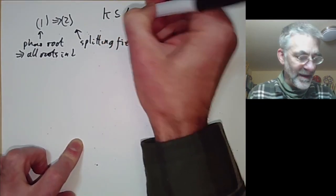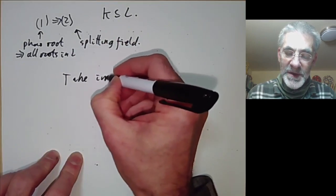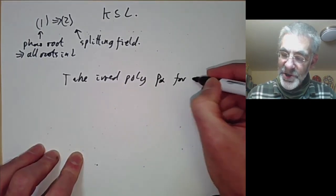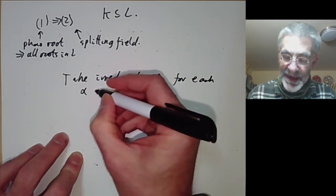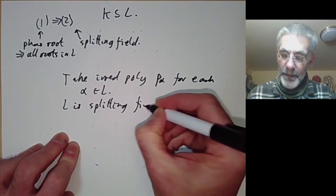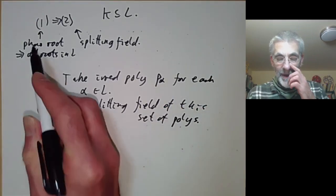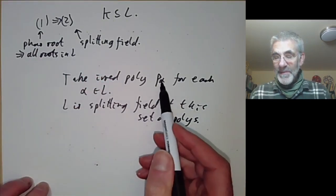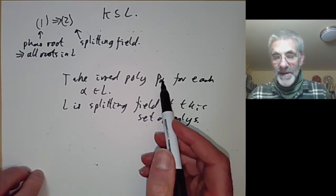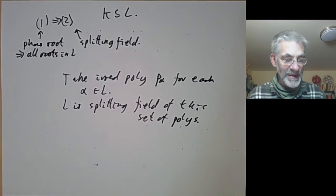Condition one implies two is easy: we take an irreducible polynomial p_α for each element α in L, and then it's easy to check that L is the splitting field of this set of polynomials. L must be a splitting field because each irreducible polynomial, by assumption, splits into linear factors in L — that's what condition one says. So L is automatically a splitting field for this.